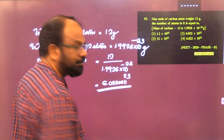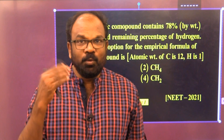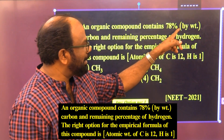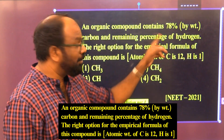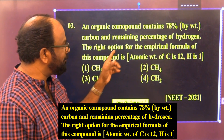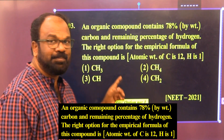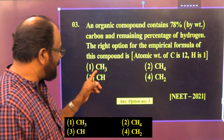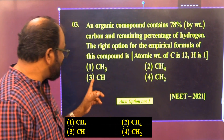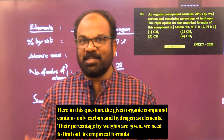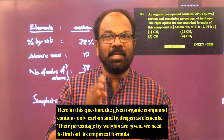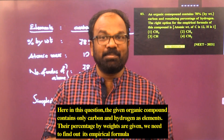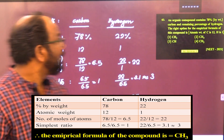Question 3: An organic compound contains 78% by weight of carbon and the remaining percentage of hydrogen. The correct empirical formula of this compound is — given atomic weight of carbon = 12 and hydrogen = 1. Option 1: CH₃, Option 2: CH₄, Option 3: CH, Option 4: CH₂. The compound contains only carbon and hydrogen.